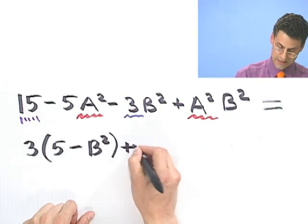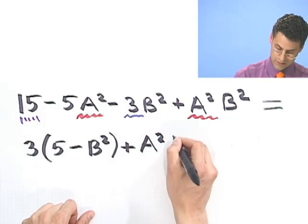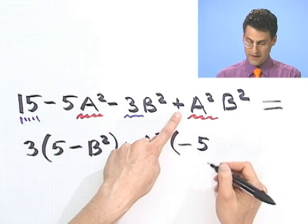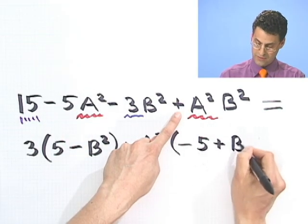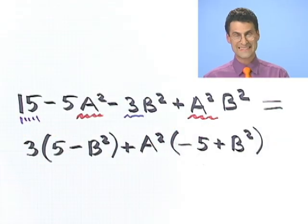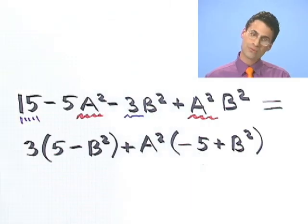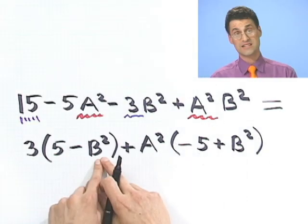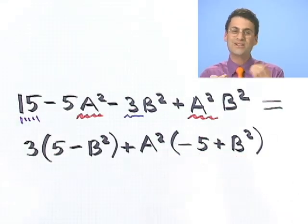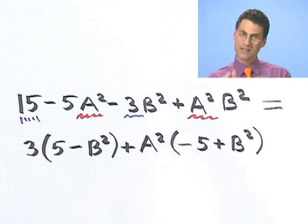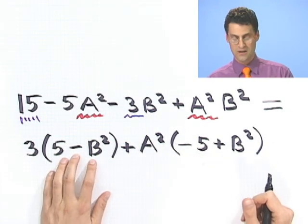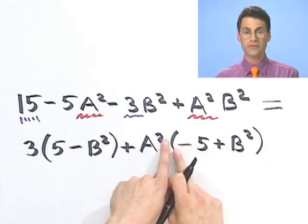And what about this stuff? Well, what am I going to factor out here? Here I'm going to factor out an a squared. When I factor out the a squared, I have a minus 5 here. And then here I have a plus b squared. And now we look and see, is there a common factor? No. Close. 5 minus b squared. And this is minus 5 plus b squared. It looks so close. They look almost the same. In fact, they look like they're just off by a little. In fact, they are the same except for a minus sign. So let me actually factor out a minus sign from here.